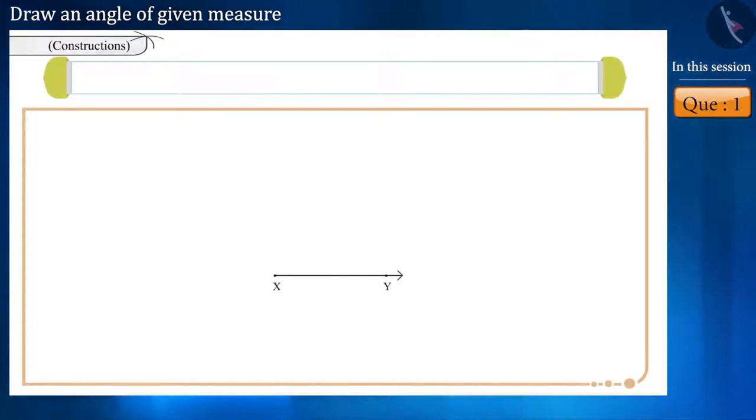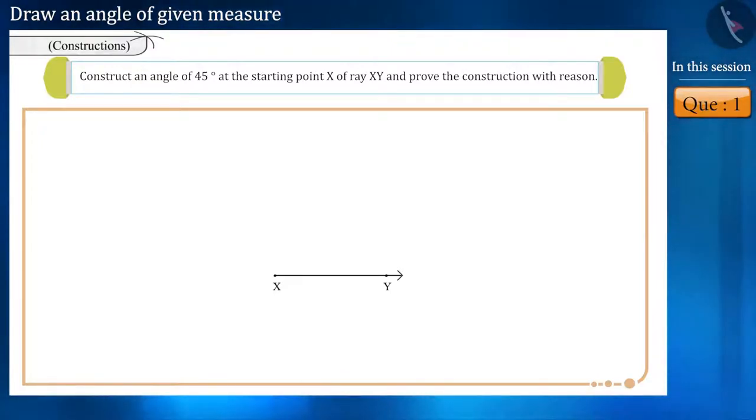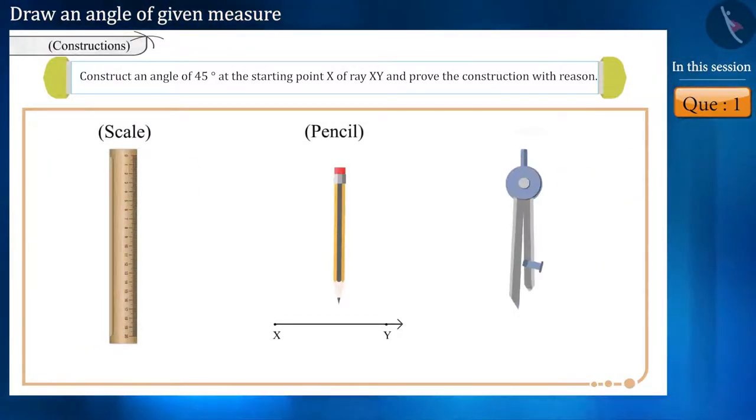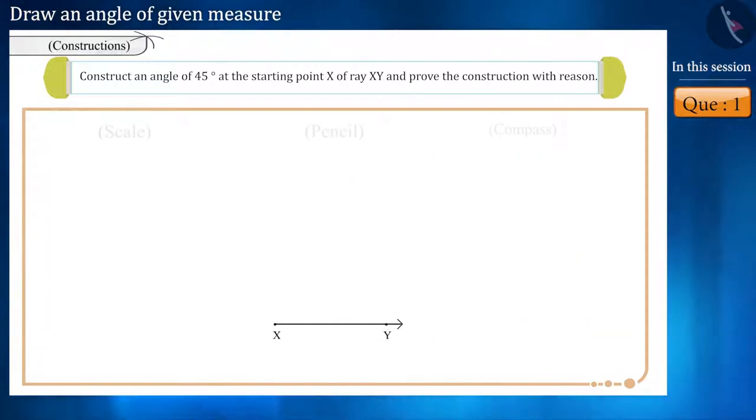From the initial point of ray XY, construct an angle of 45 degrees and prove that the construction is geometrically correct. As you know, we have only scale, pencils, and compass. With the help of this, we have to construct the angle. So, find out how.